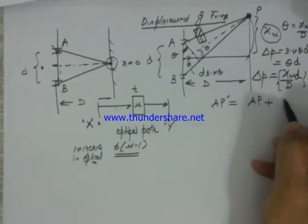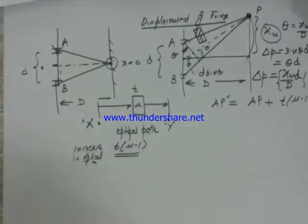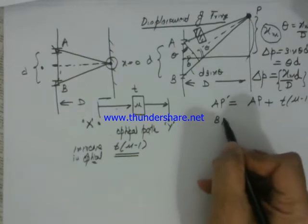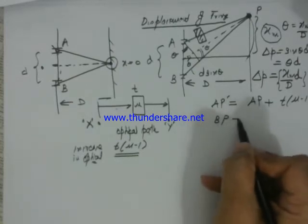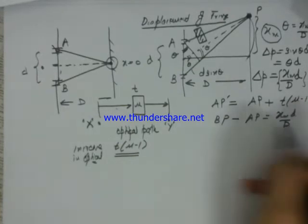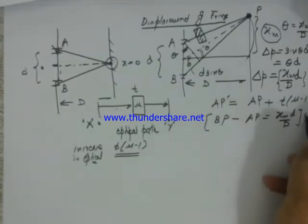So here the effective distance for the path AP dash will be AP, which is the real distance, plus increase in optical path because of the slab. The path difference at point B was BP minus AP initially, which was xmd upon d.